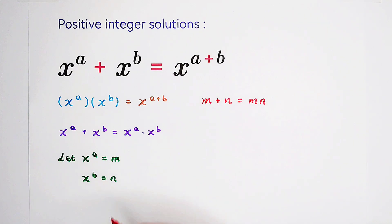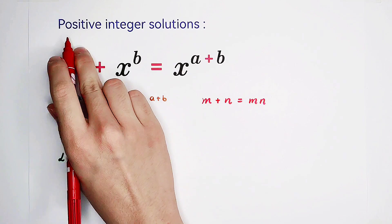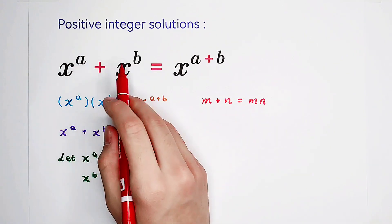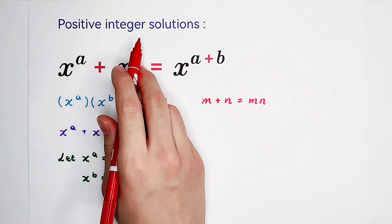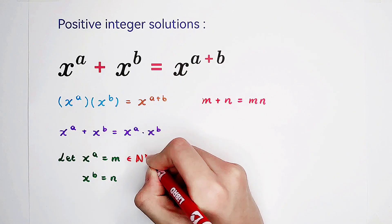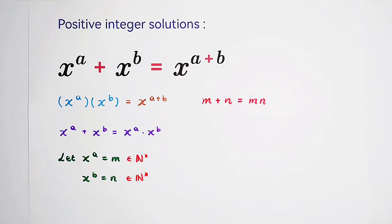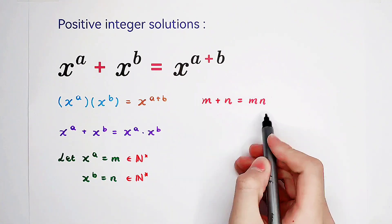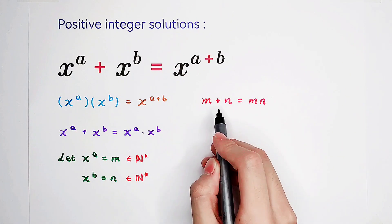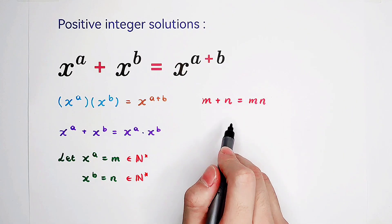Of course, m and n are positive integers because x, a, and b are positive integers. So m is a positive integer, n as well. So then we have to solve for m and n, positive integers m and n satisfying this equation: m plus n equals m times n.